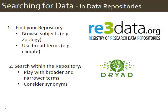When you do find a repository in your subject area, such as Dryad, you can search there directly. Search tips in a repository are different than in a directory. Currently, searching in repositories is pretty primitive — your search will require more trial and error with keywords. Play with both broad and narrow terms, think about other ways the data may have been described, and use synonyms.